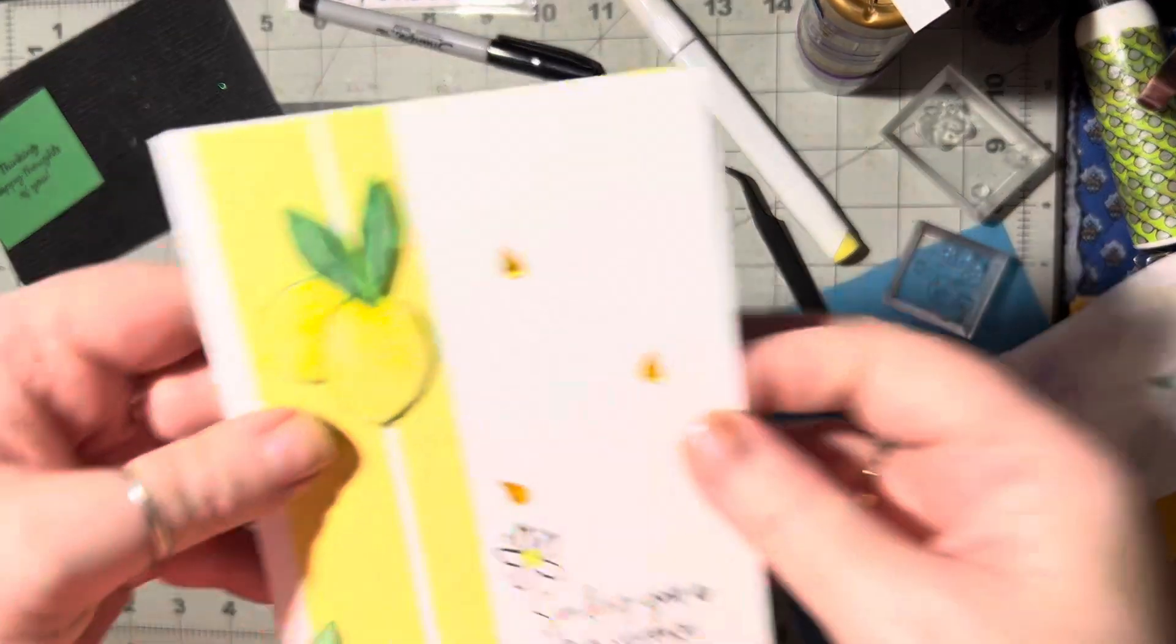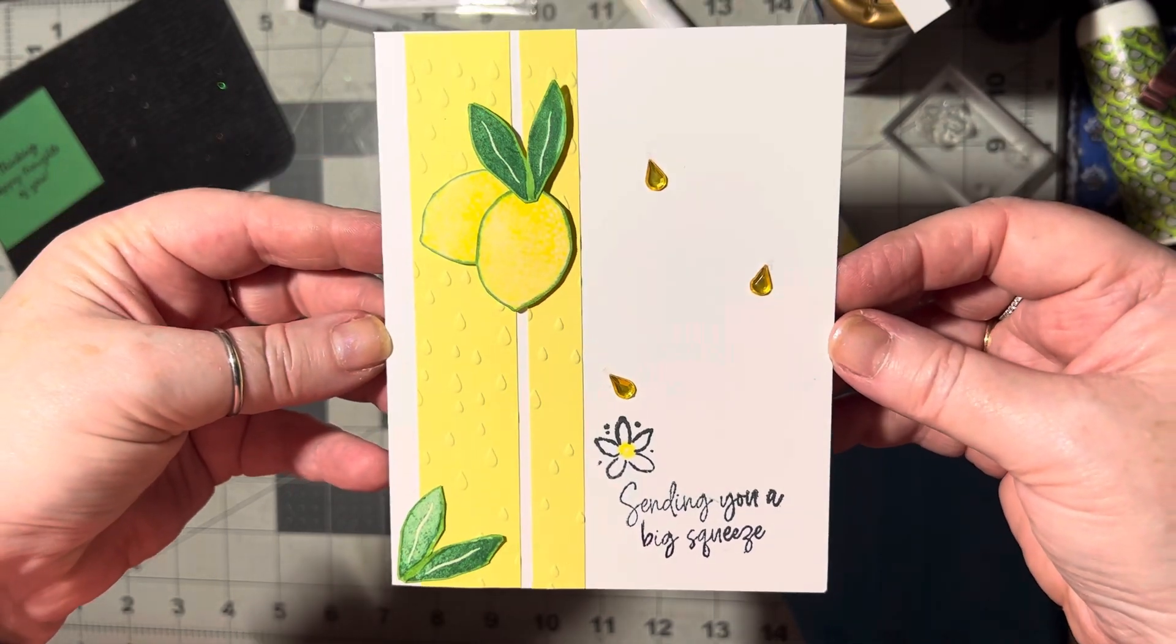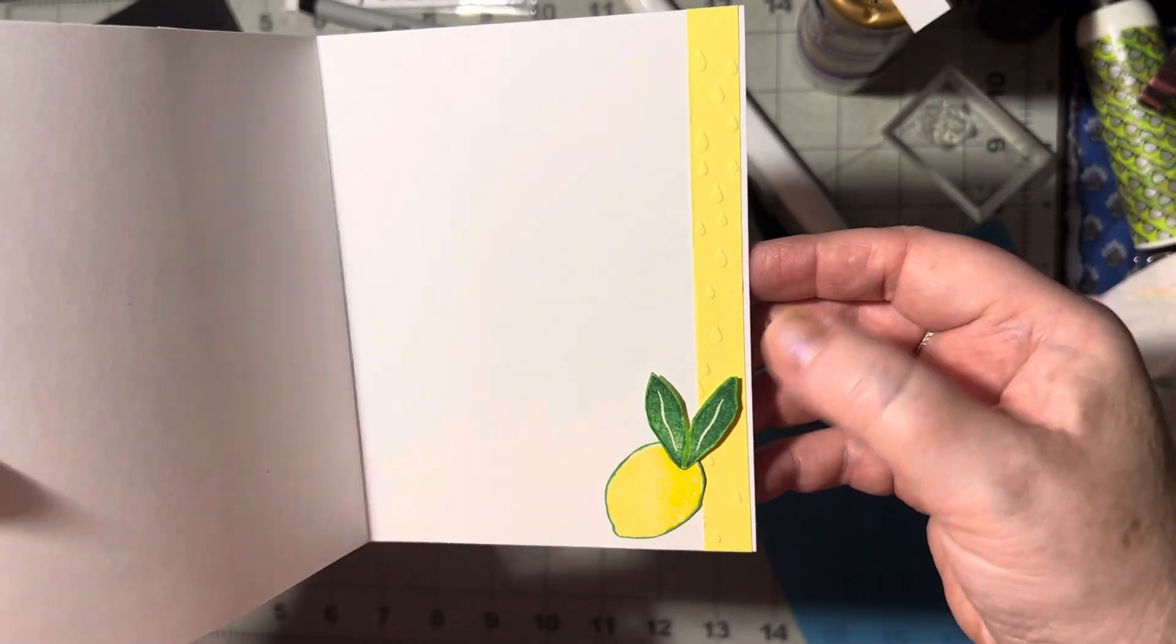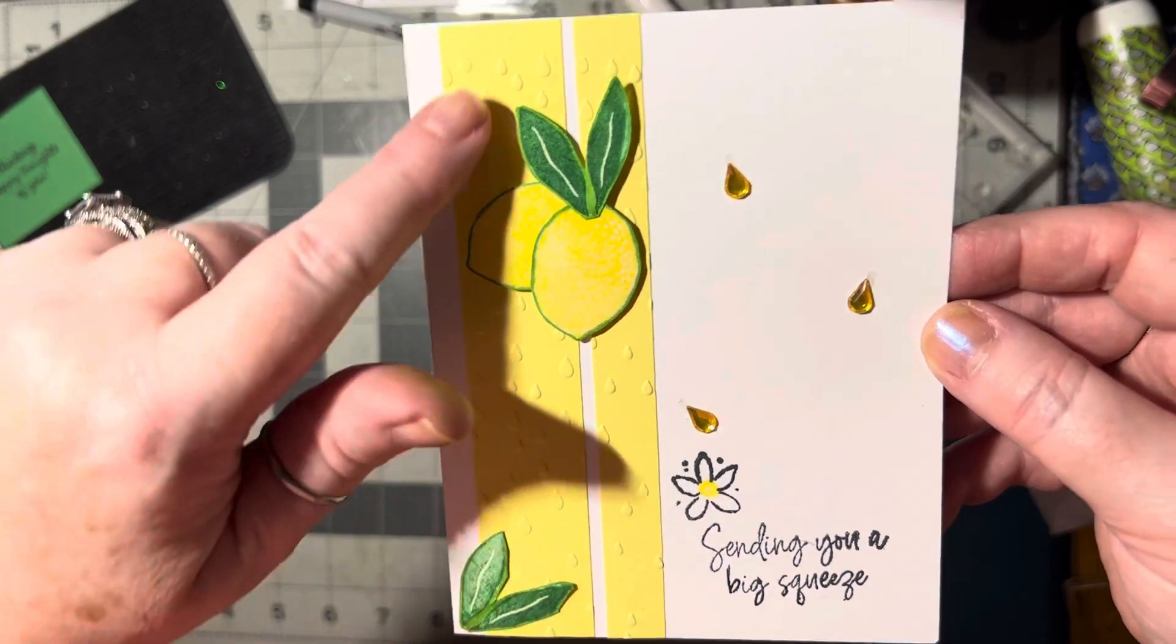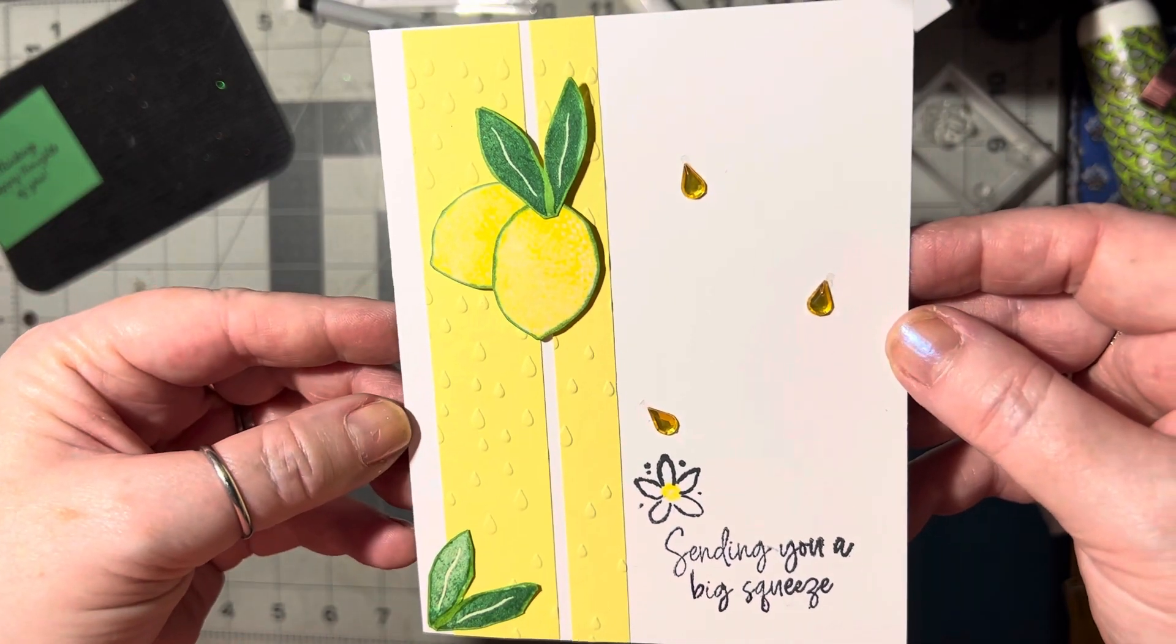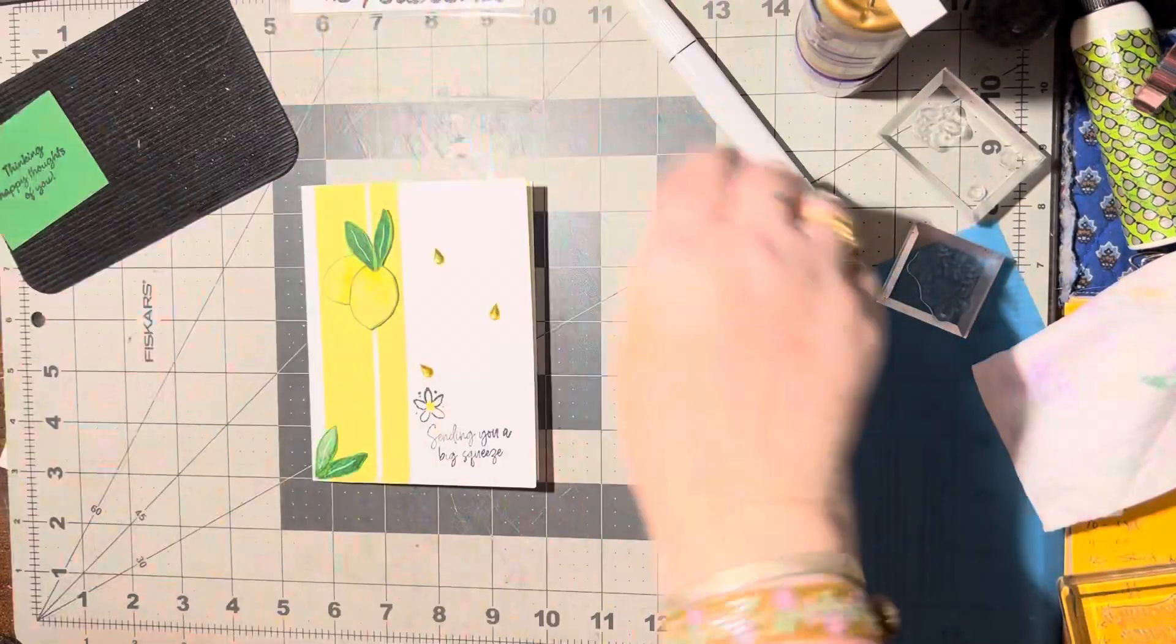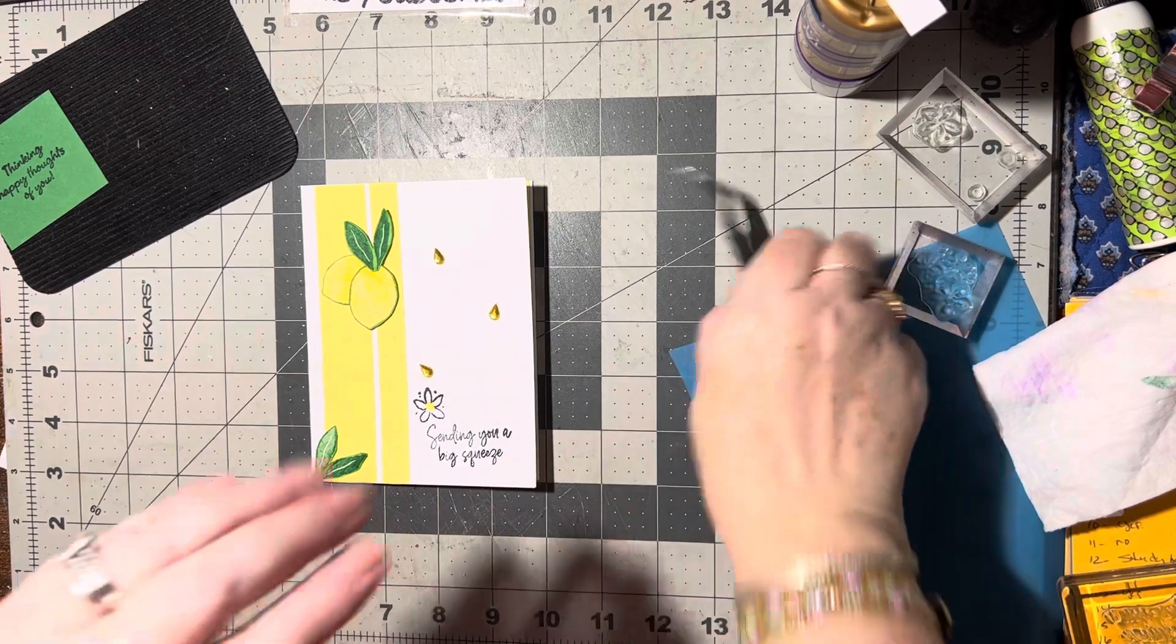So check that out, there's our lemon squeezy card. And there's the inside, I love the inside too. That's really cute and I love that using the raindrop folder to make it look like pulp, that's pretty clever. I hope you like this idea and you'll give it a try. Until we meet again, happy crafting, bye bye.